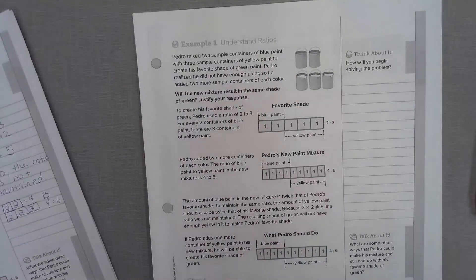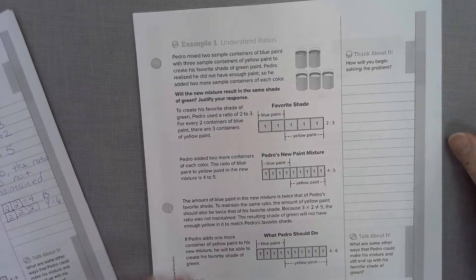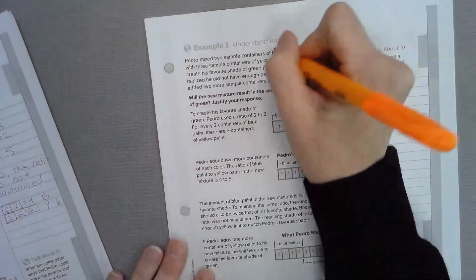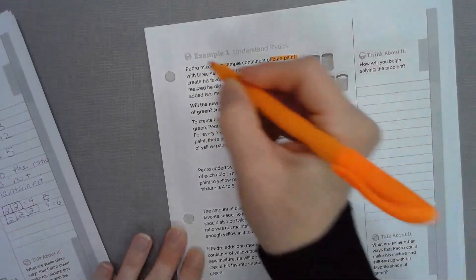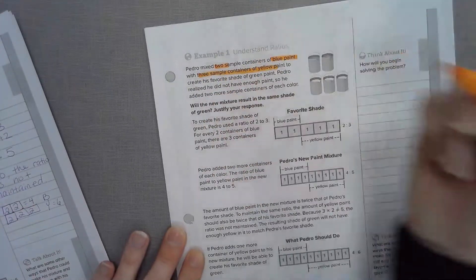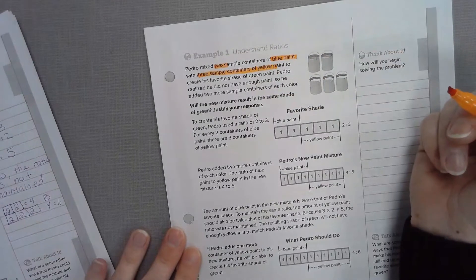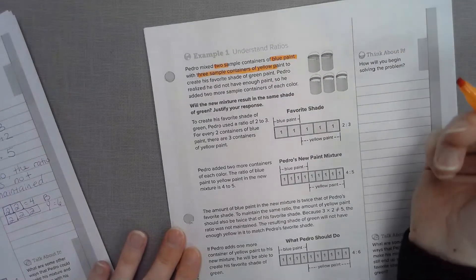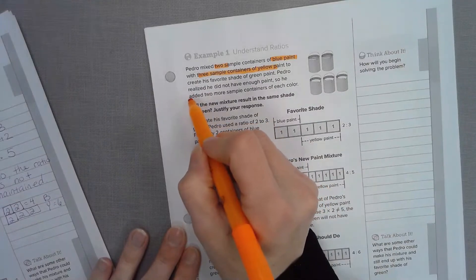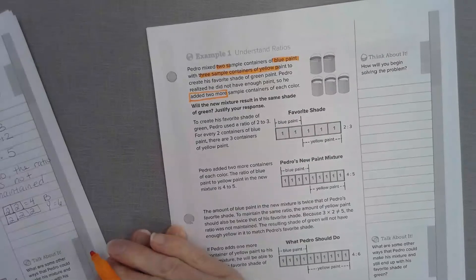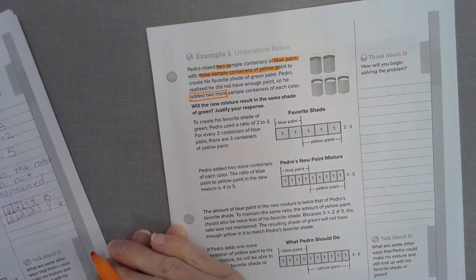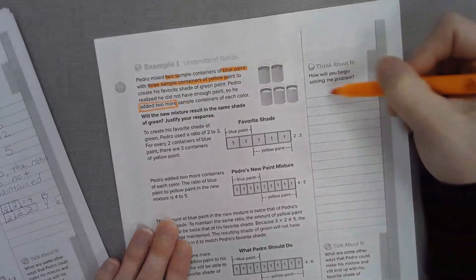Let's go ahead and flip the page. Understanding ratios. Pedro mixed 2 sample containers of blue paint with 3 sample containers of yellow paint to create his favorite shade of green. Let's highlight that. He mixed 2 blue paints with 3 yellows. Pedro realized he did not have enough paint, so he added 2 more sample containers of each color. Let's underline added 2 more. Will the new mixture result in the same shade of green?